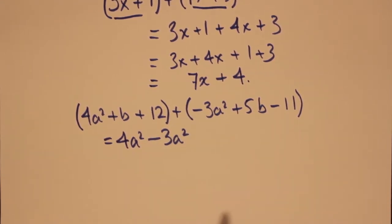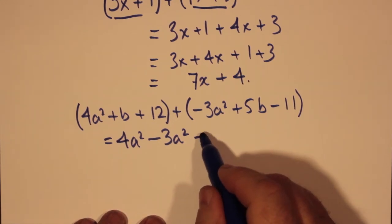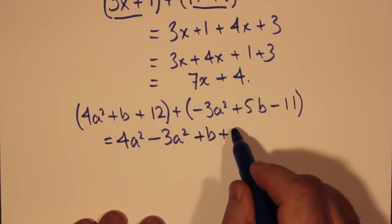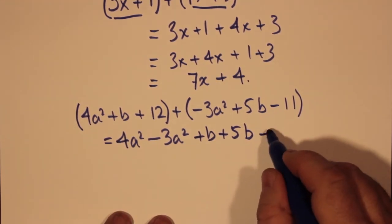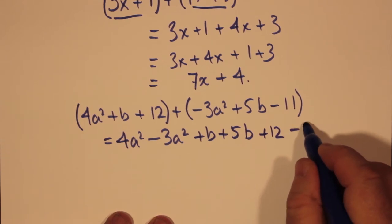What we're doing to the 4a squared when we gather our like terms is we're subtracting 3a squared because there's a minus in front of the 3. And when we move the like terms around, the minus goes with the coefficient that was in front of the a squared.